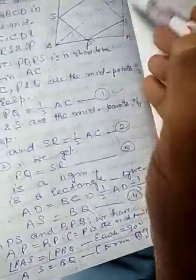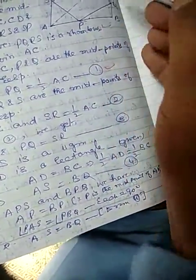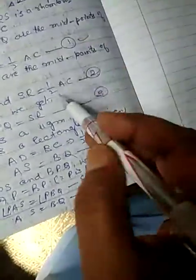In triangle ADC, as usual R and S are the midpoint of CD and DA respectively. Therefore SR is parallel to AC and SR is equal to one half of AC.